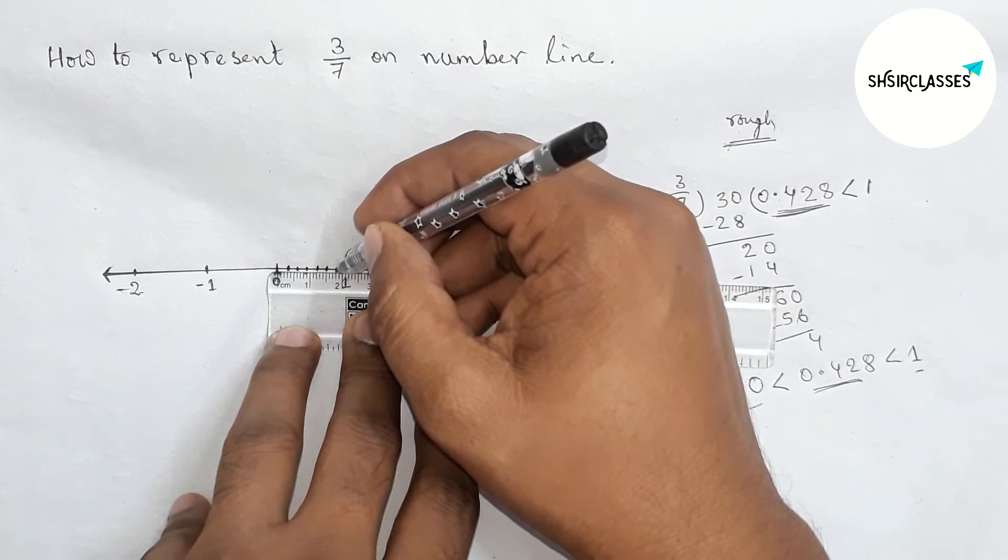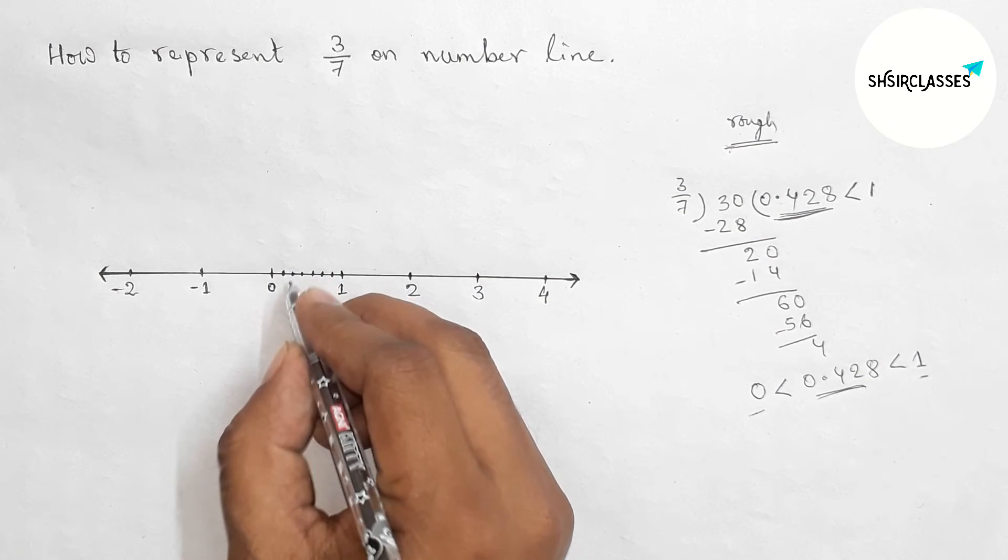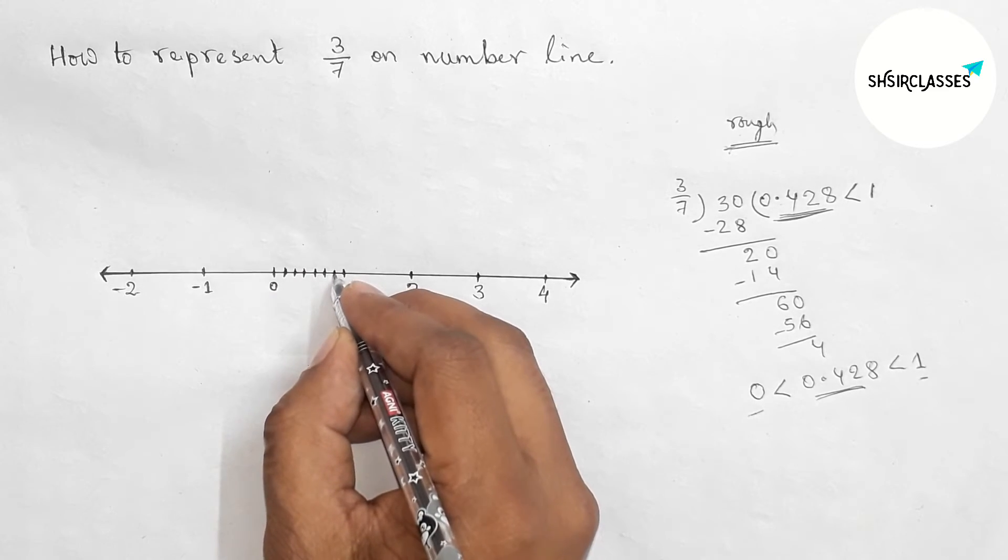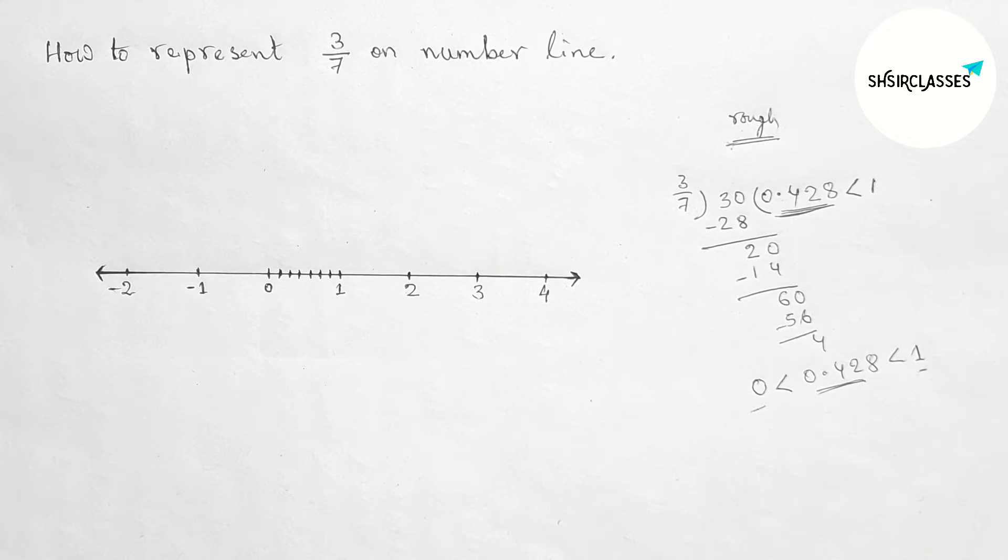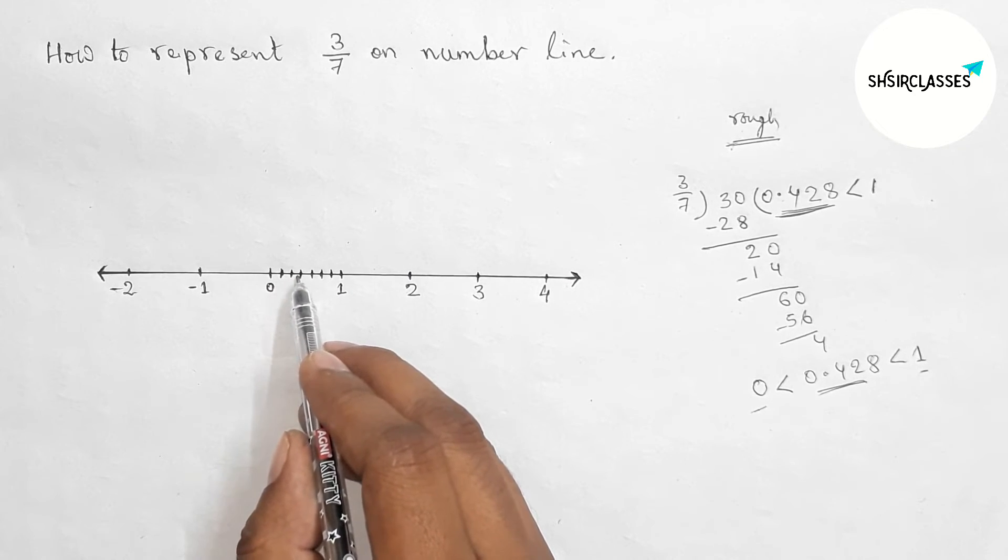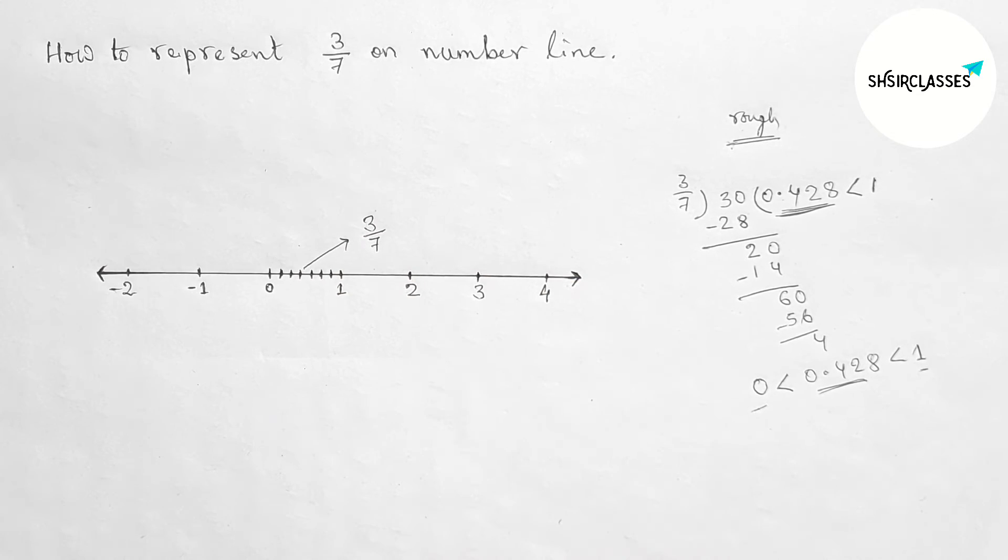Sixth part will be 1.8 centimeters. By this way, divide the length between 0 and 1. Now counting: this is 1, 2, and this one is 3. So this is 3/7.